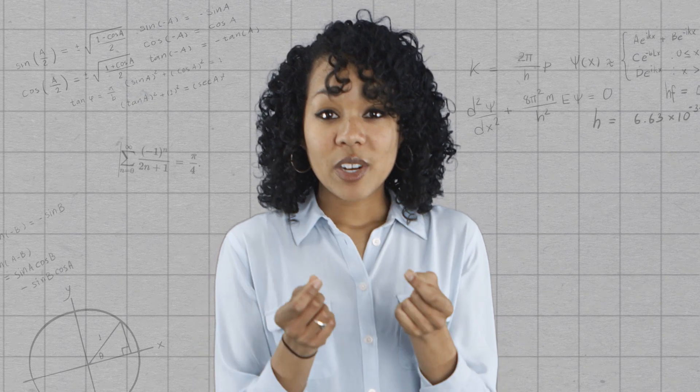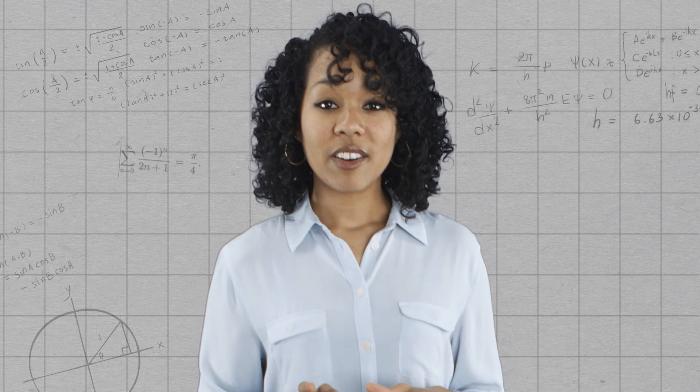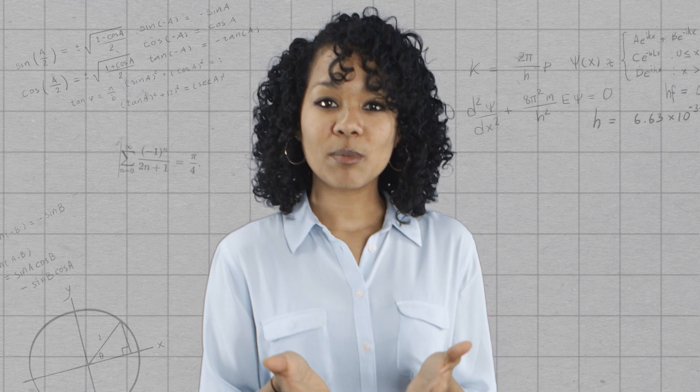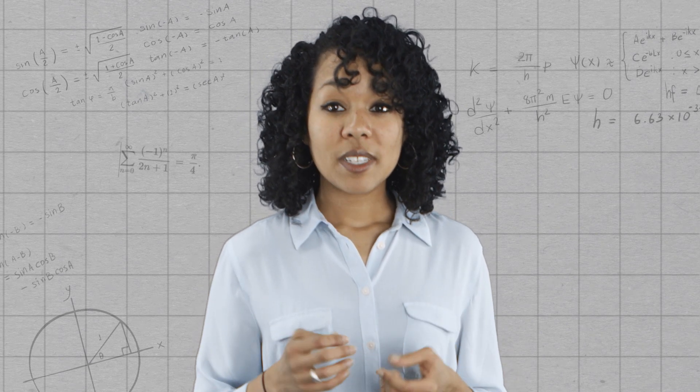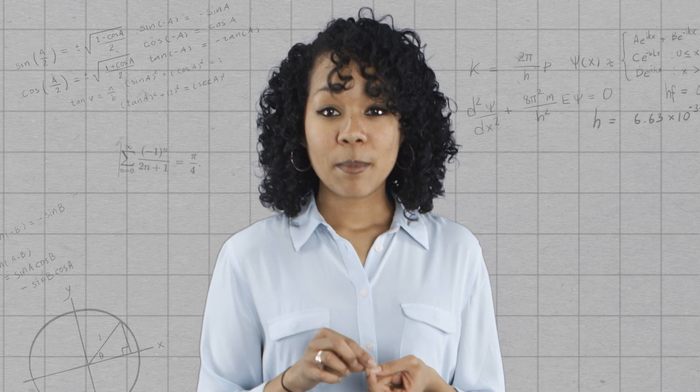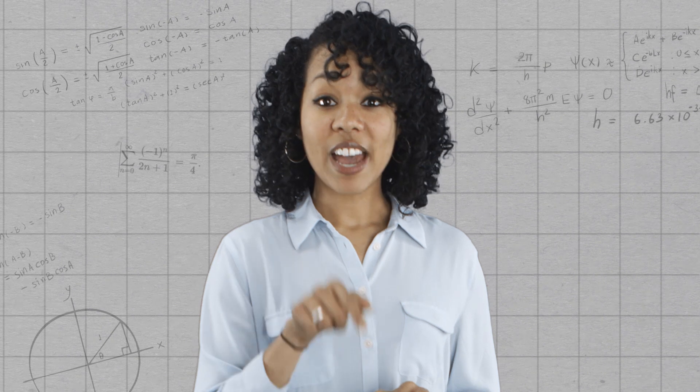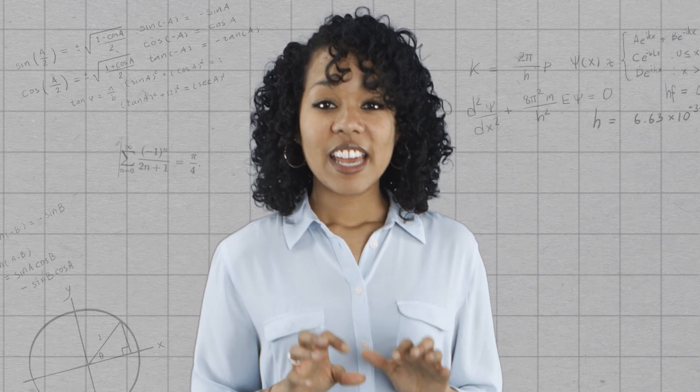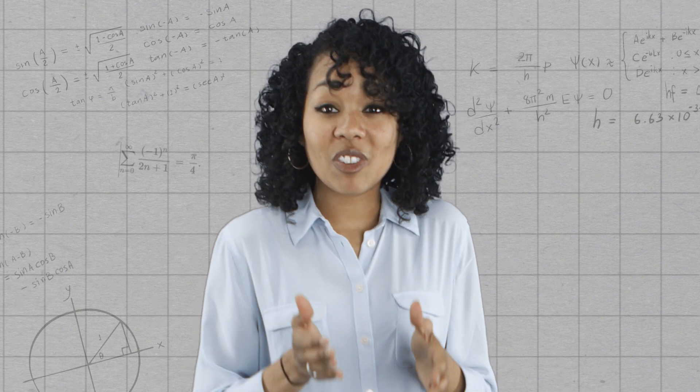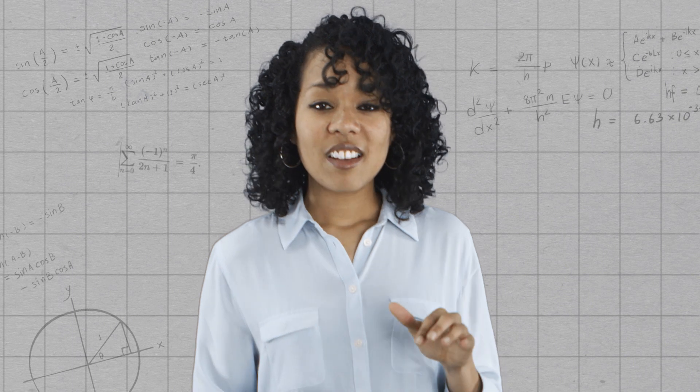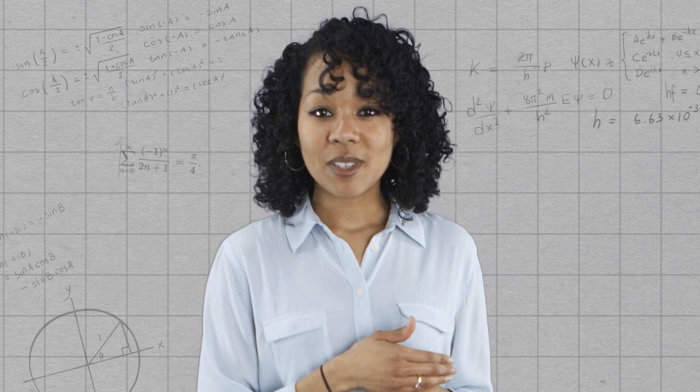For example, you can take any two numbers and add them to get a third number. So addition is an example of a binary operation on the set of real numbers, and so is multiplication. As another example, we can look at the set of all loops that start and stop at the same point in a topological space, and loop concatenation is a binary operation on that set. In practice, the word addition is often used to describe a binary operation that is commutative, even if the set we're looking at is not the set of real numbers. This is not a hard and fast rule, it's just a bit of shorthand.